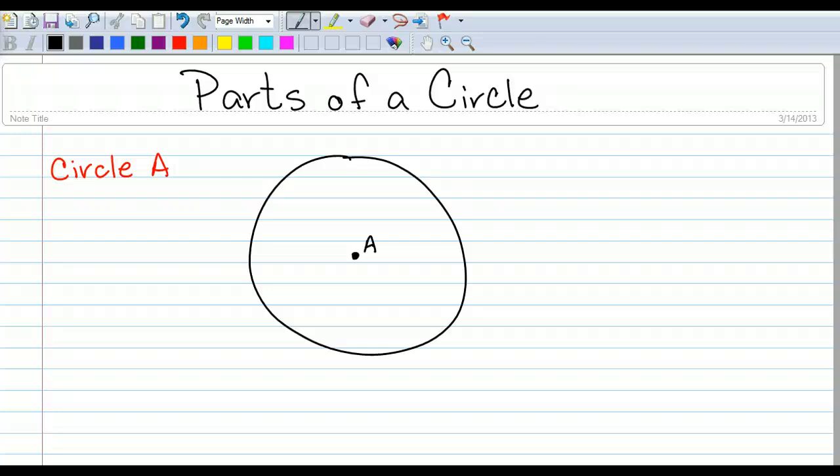All right, parts of a circle. Here I have got my circle. There is a point in the center of the circle, and I've named that point A, and circles are named after the point that is in the center of the circle. So this is called circle A, and there are different parts of circles.